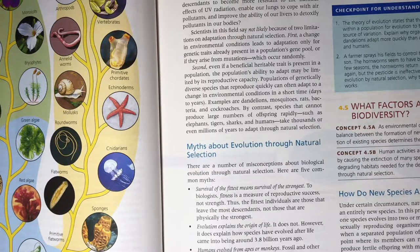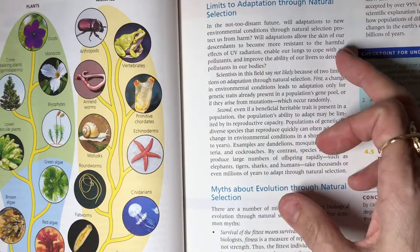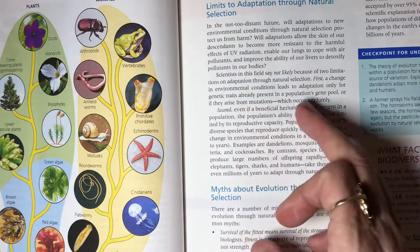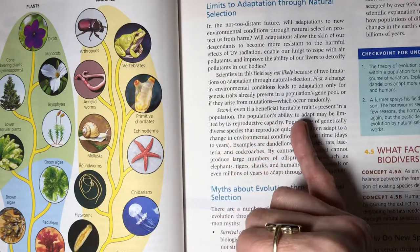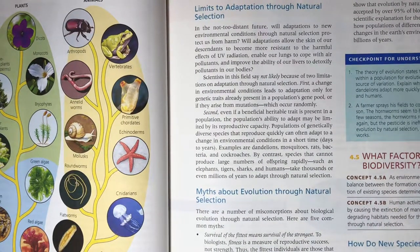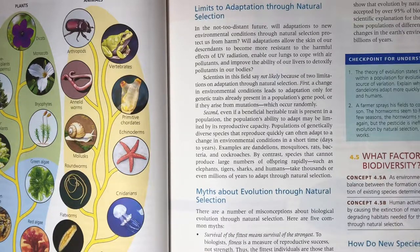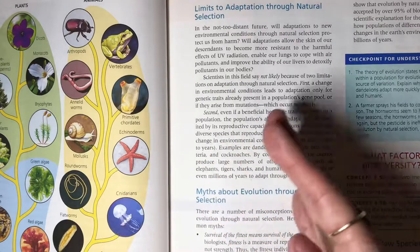The two limits to adaptation through natural selection are: first, a change in environmental conditions leads to adaptations only if the genetic traits are already present in the population pool. Second, even if a beneficial heritable trait is present, the population's ability to adapt may be limited by its reproductive capacity. This is important for understanding why r-selected species are more likely to survive rapid changes than K-selected species — they can fix a new mutation into their population much more rapidly.